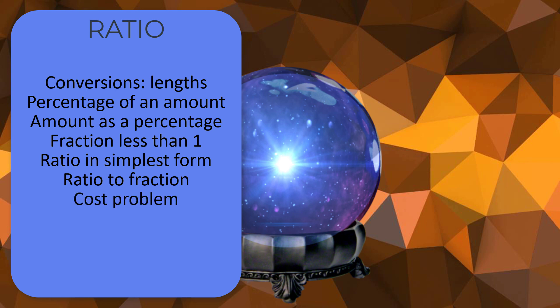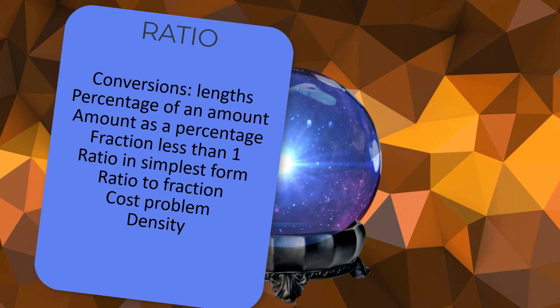Cost problem. So one of those problems, maybe it's like a Best Buy thing or working out which is the cheapest way of purchasing something if there are several options. Density. Density is equal to mass divided by volume. Given two of those things, you should be able to work out the third thing.